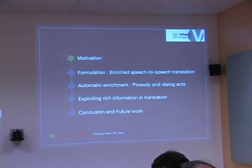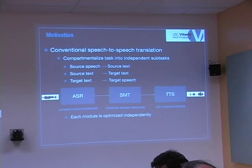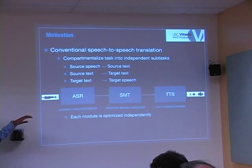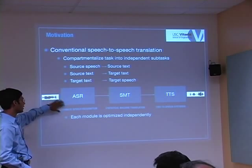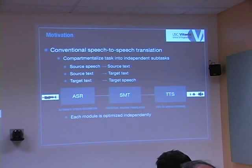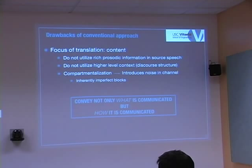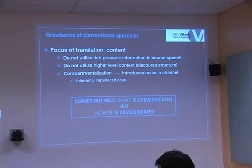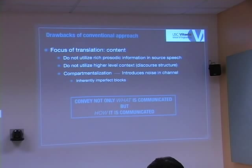Let me formulate the problem. Conventional speech-to-speech translation has three independent sub-blocks, each optimized individually — ASR with word error rate, machine translation with BLEU score or NIST score, and TTS with mean opinion score. The problem is that the focus is on content, and you do not utilize rich information present on the source side, such as what is being said and how it's being said. The compartmentalization itself introduces noise. My hypothesis is to convey not only what is communicated but also how it's being communicated.